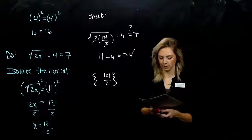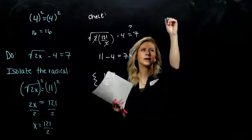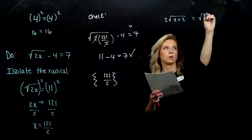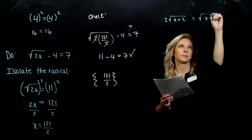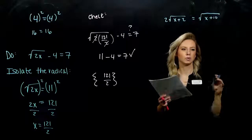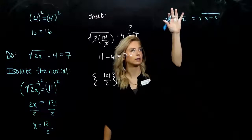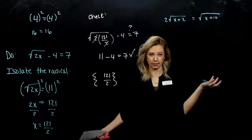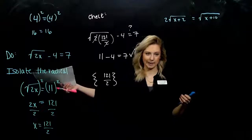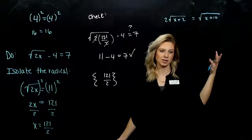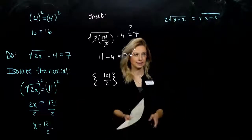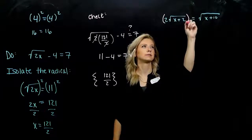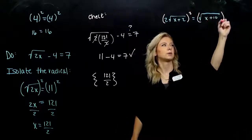Let's look at another one. In this next example I have two radicals — one on the left, one on the right. Whenever we have two radicals, we just want to have them split up. If I have one on the left-hand side and one on the right, that counts as being isolated. If there's one radical, we need it on its own; if there's two, we just need to split them up. Since I have that equality, we can go ahead and square both sides and it's still going to be true.